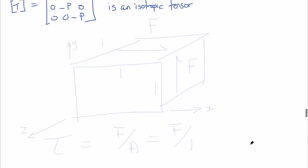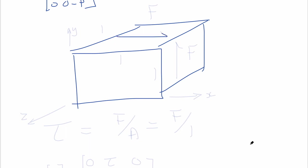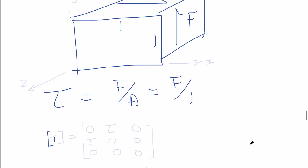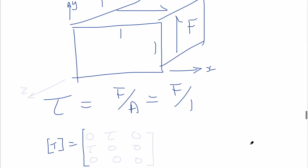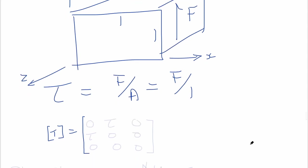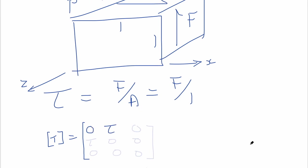In another example, imagine a unit cube with shear tractions f acting on the y-face in the x-direction and on the x-face in the y-direction. These define shear stresses TAU_XY and TAU_YX. To be in equilibrium there must be equal and opposite shear tractions on the opposite faces. The stress tensor here has no normal stresses — only shear stress TAU.